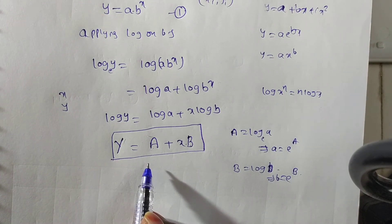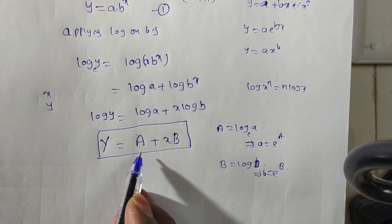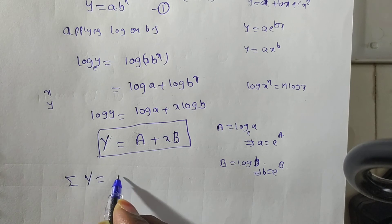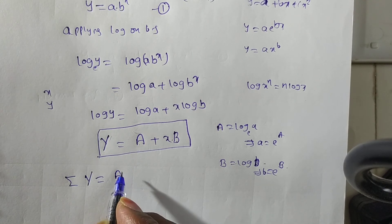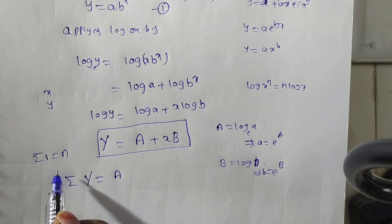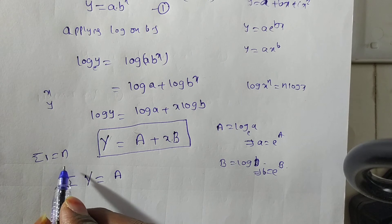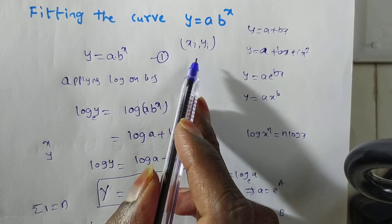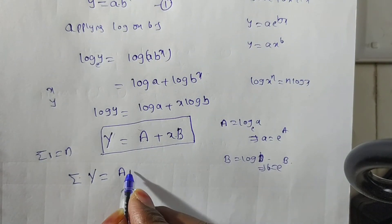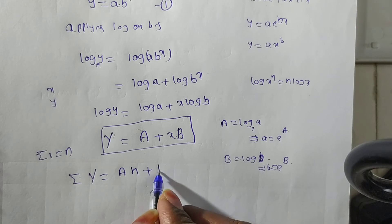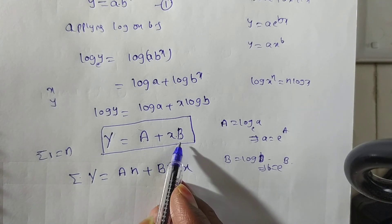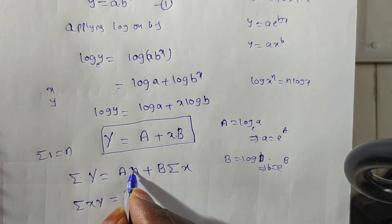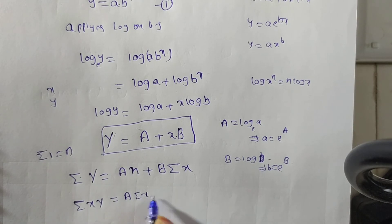For the straight line Y = A + Bx, there are two normal equations. The first equation: multiply by 1 and sum — summation Y = nA + B·summation x, where n is the number of observations. The second equation: multiply by x and sum — summation xY = A·summation x + B·summation x².